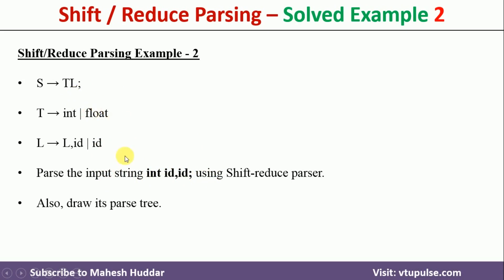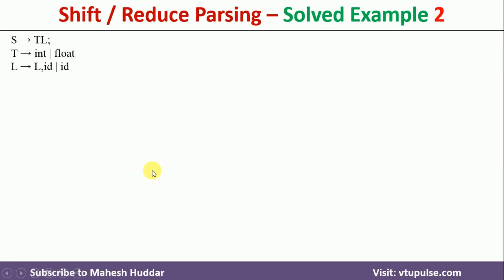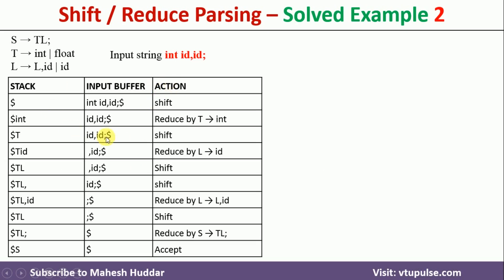We also need to draw the parse tree in this case. First, we will try to understand how to apply shift-reduce parsing for this particular grammar as well as the input string. This is the grammar and this is the input string given to us. Now, this is how we can apply shift-reduce parsing on top of this particular input string.